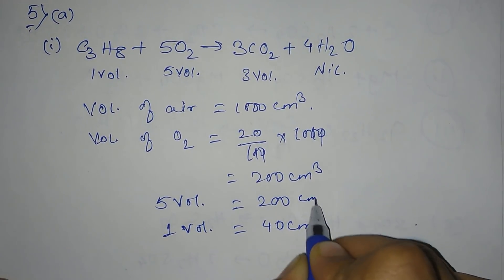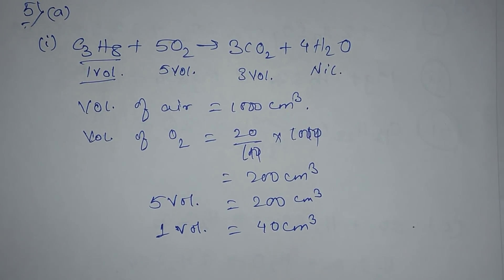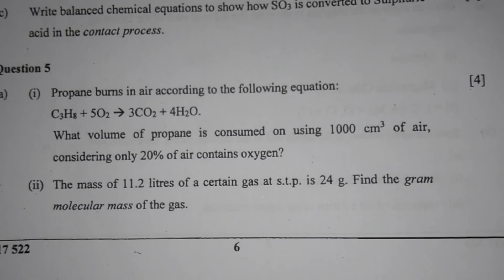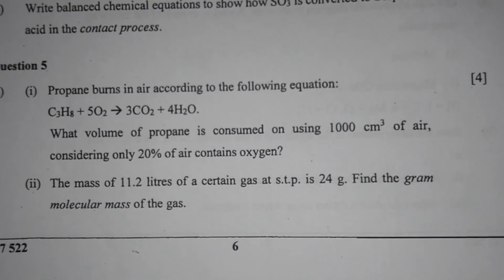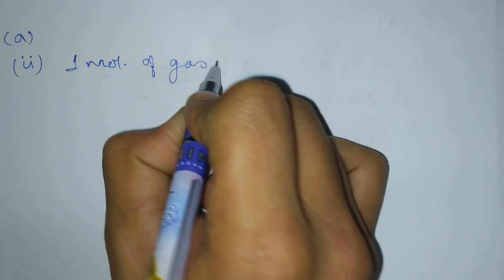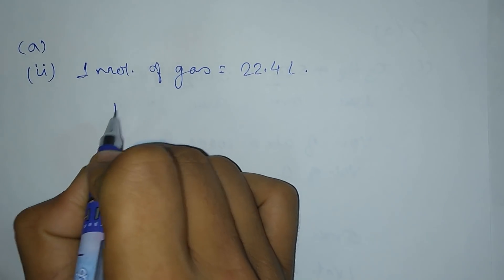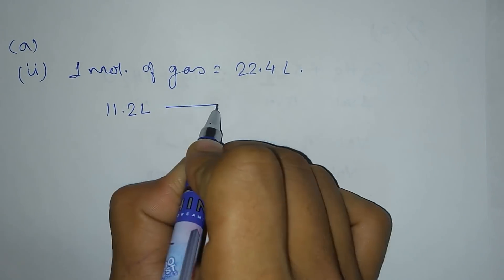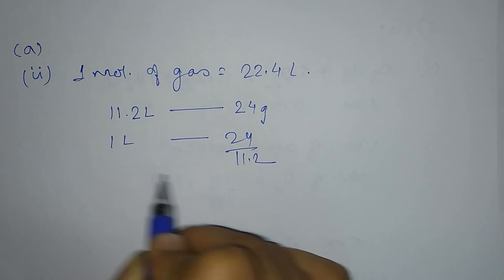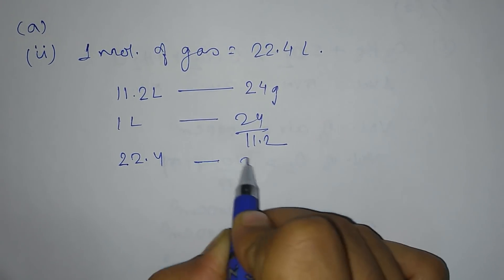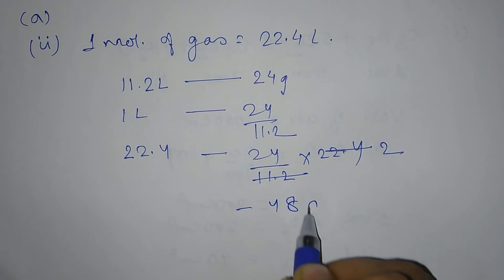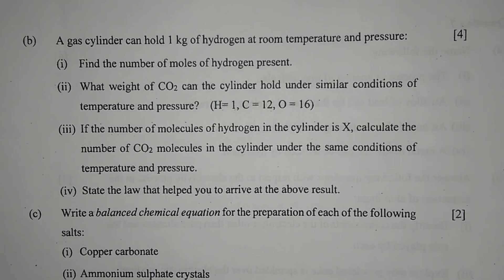Part 2: the mass of 11.2 liters of a certain gas at STP is 24 grams. Find the gram molecular mass of the gas. Since 1 mole of gas equals 22.4 liters, and 11.2 liters has a mass of 24 grams, then 22.4 liters will equal 24 / 11.2 × 22.4, which equals 48 grams.